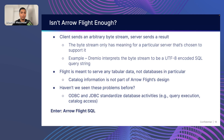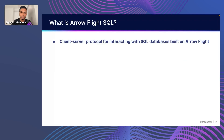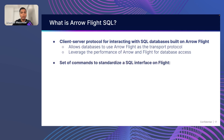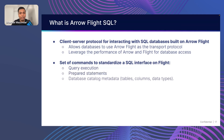So now let's talk about what Arrow Flight SQL is. It's a protocol for interacting with SQL databases built on top of Arrow Flight. We are not replacing anything that Arrow Flight did — we are just actually building on top of it. We get all the advantages discussed until now. It allows databases to use the Arrow Flight protocol for transfer, but it also standardizes how to make it easy for the client side and avoid having so many different protocols. It leverages the performance benefits that Arrow and Arrow Flight provide for database access.